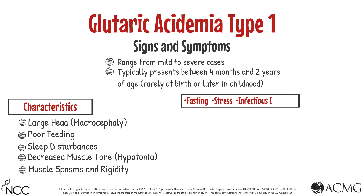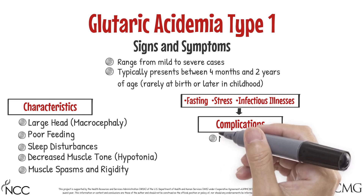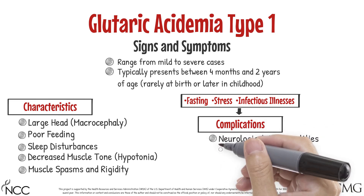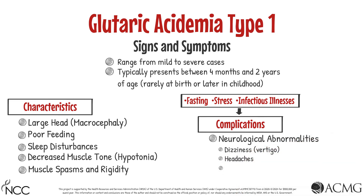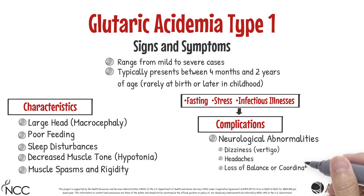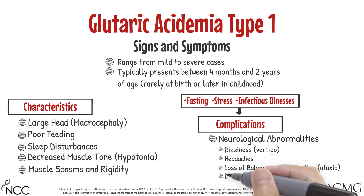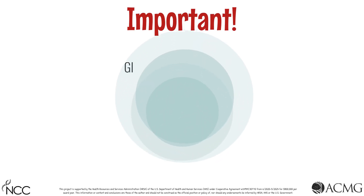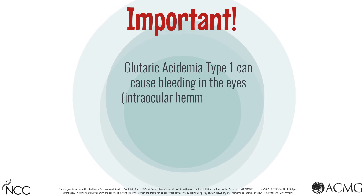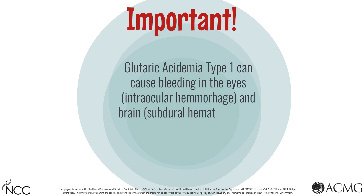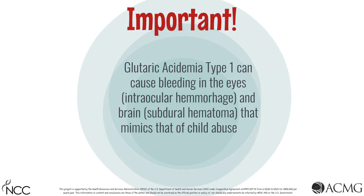Fasting, stress, and infectious illnesses can cause complications of this condition, including neurological abnormalities like dizziness or vertigo, headaches, loss of balance or coordination — known as ataxia — and dementia. It is important to note that Glutaric Acidemia Type 1 can cause bleeding in the eyes and brain, called a subdural hematoma, that mimics that of child abuse and shaken baby syndrome.